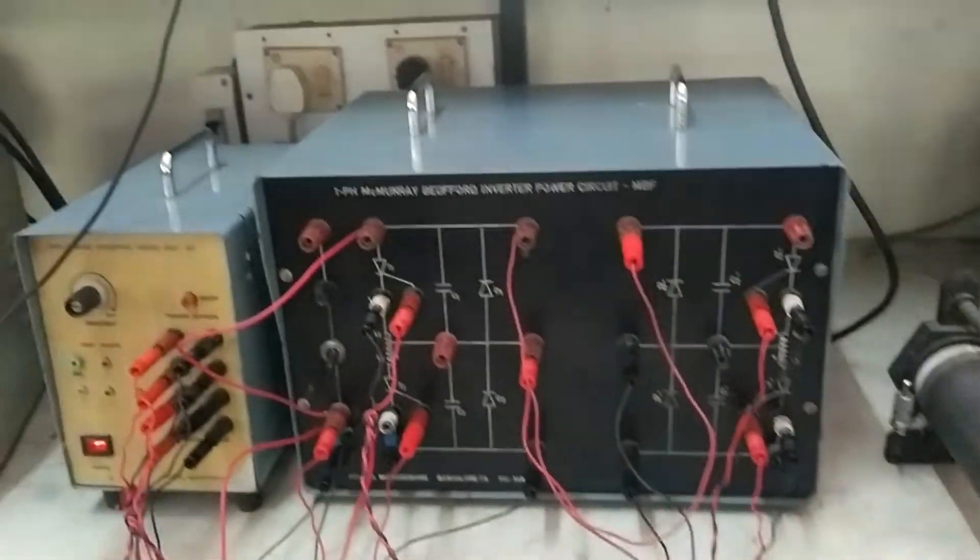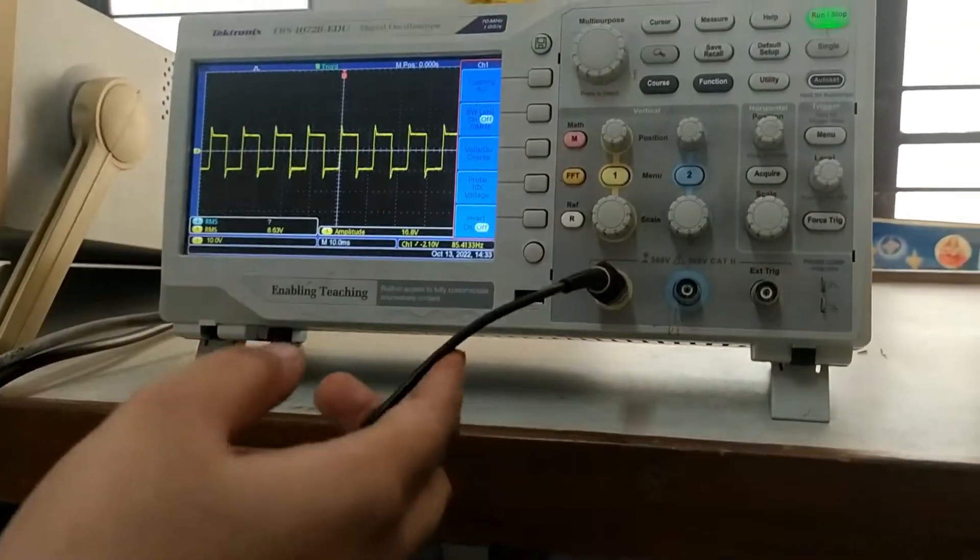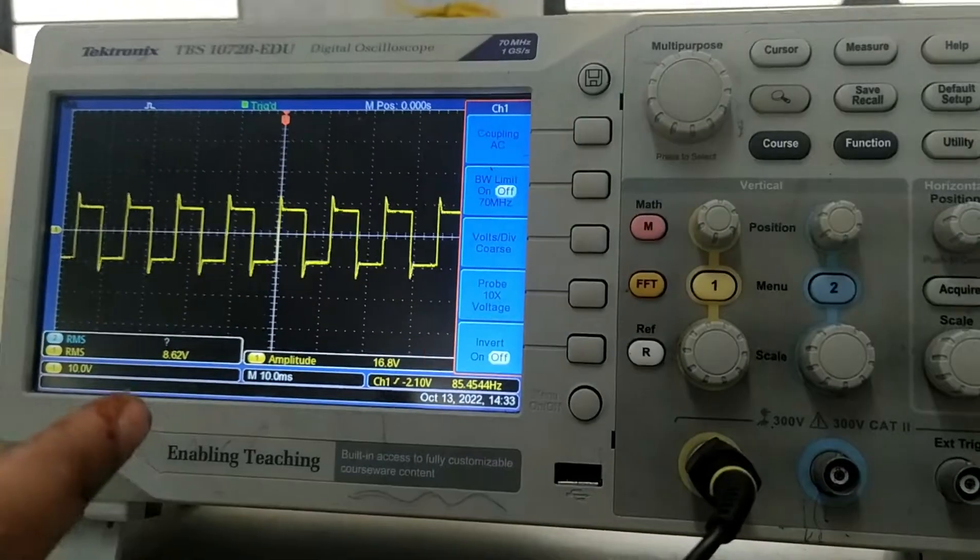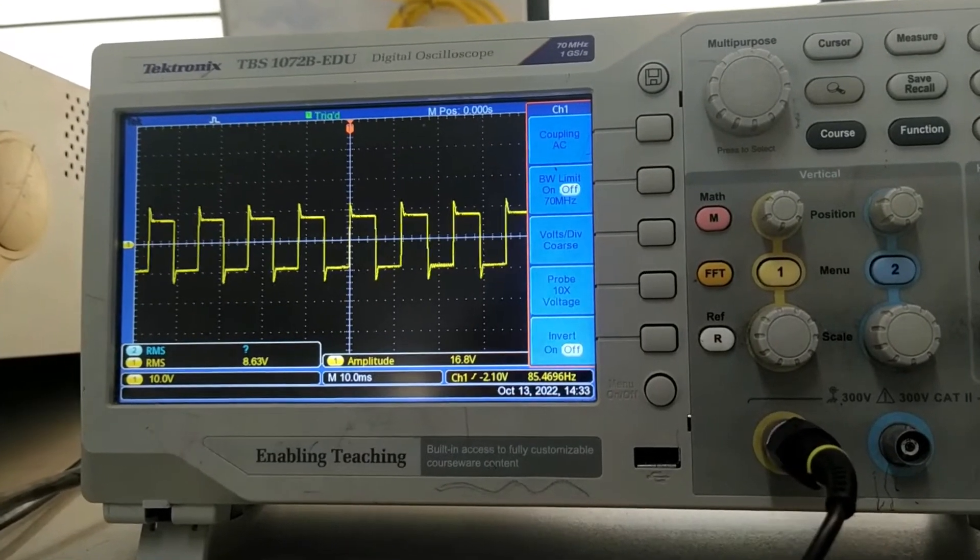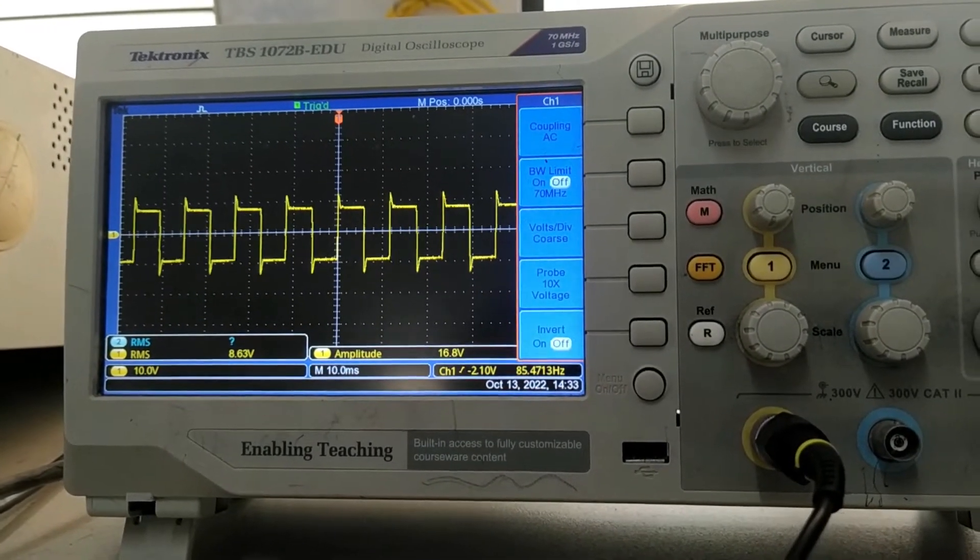Here I had used the oscilloscope. Here you can see the oscilloscope. From this we will get the output. The output will be in a square waveform, which means the inverter is working properly.